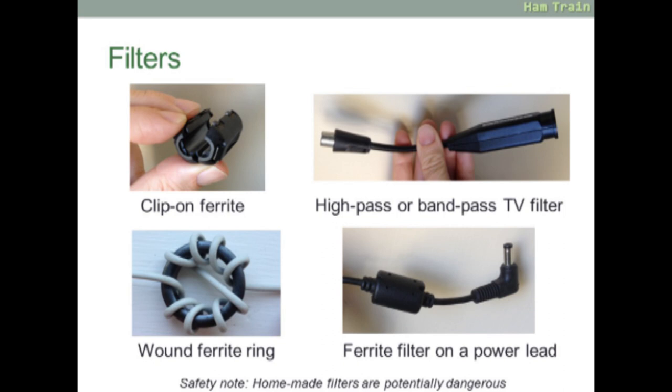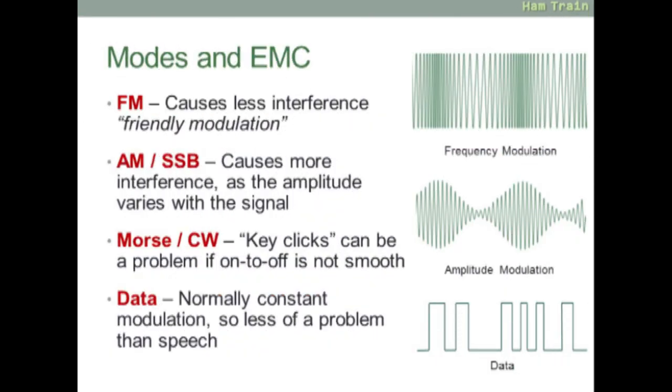A quick look at modes and EMC. FM is the least likely to cause interference. Handy way of remembering this: friendly modulation, FM. AM or single sideband are most likely to cause interference, as the amplitude is constantly going up and down.